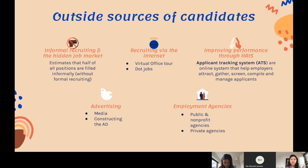Advertising is another outside source. Employers use help-wanted ads successfully by addressing two issues: the advertising medium and the ad's construction. For the media, the best medium depends on the position being recruited for. For example, the local newspaper is often a good source for local blue-collar, clerical, and lower-level administrative employees, while the Wall Street Journal can be a good source for middle or senior management personnel. For constructing the ad, experienced advertisers use the AIDA guide — Attention, Interest, Desire, Action.